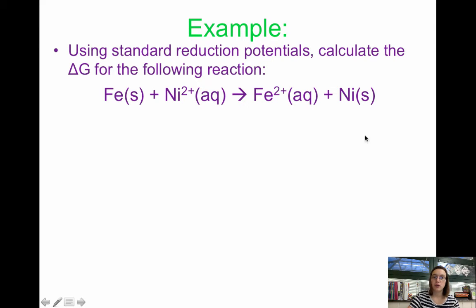We have nickel 2+ being reduced to Ni. Remember the total cell potential equals the reduction half reaction plus oxidation half reaction. We find that it is negative 0.28 plus 0.440. If you have questions on how you got this, look at your reduction potential table.